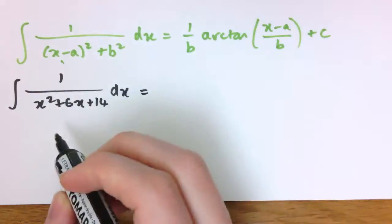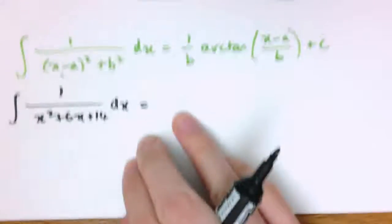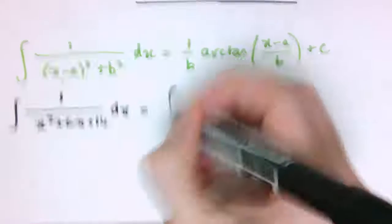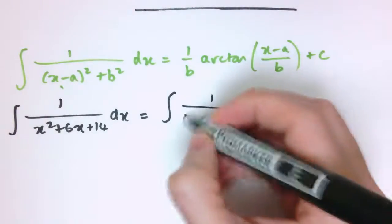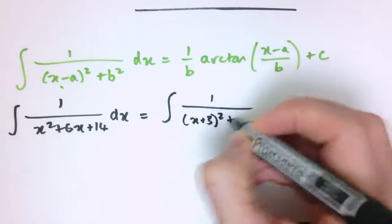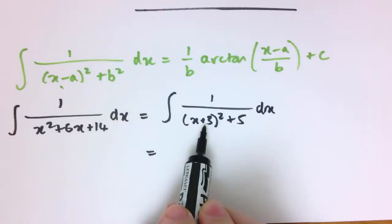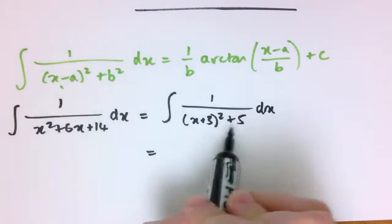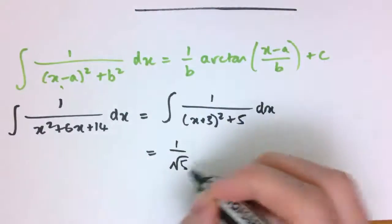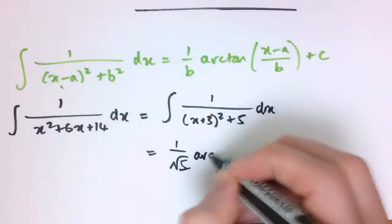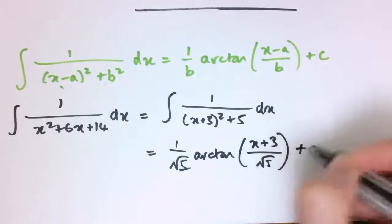But of course if the quadratic isn't in completed square form, we can just put it in completed square form, so we've got x squared plus 6x plus 14 here, you can check that that's equal to x plus 3 squared plus 5, and so here I've got a is minus 3, and b is the square root of 5, so I get 1 divided by the square root of 5 times arctan of x plus 3 divided by the square root of 5, plus c.